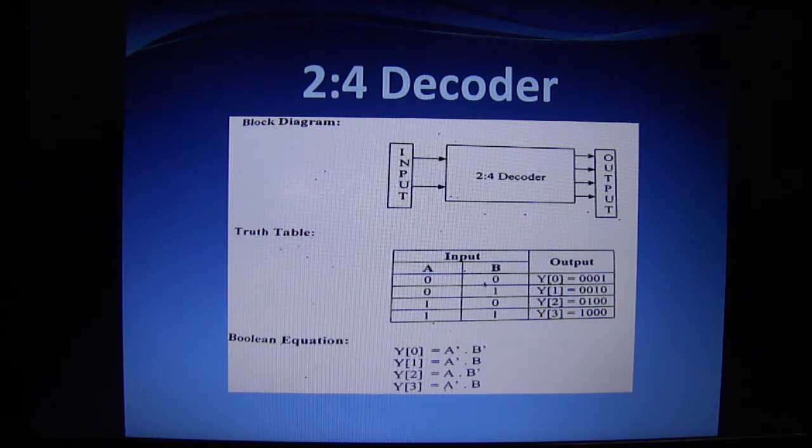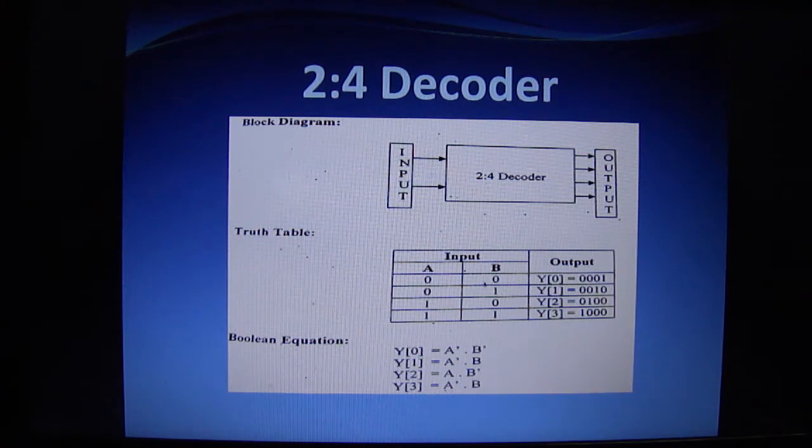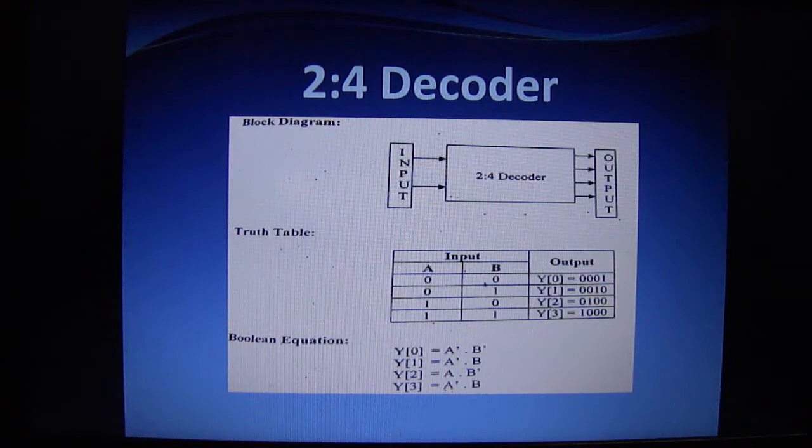When the input combinations are 00, we will get the output as 0001. When the input combination is 01, we will get 0010. When the input combination is 10, we will get 0100.